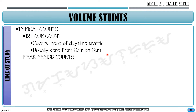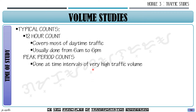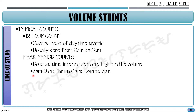We also have peak period counts, done at intervals of very high traffic volume. We collect data only at times when we know traffic is at its highest — usually in the morning, midday, and evening. Time intervals are typically 7 a.m. to 9 a.m., 11 a.m. to 1 p.m., and 5 p.m. to 7 p.m., though these can change based on location.